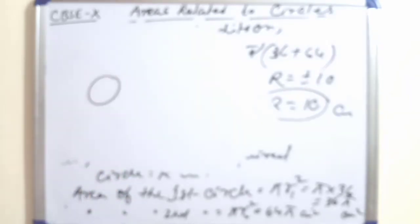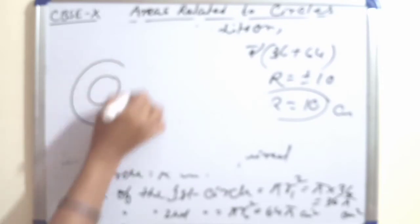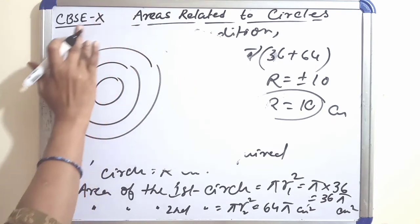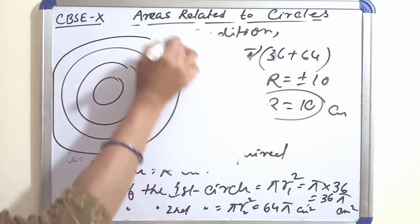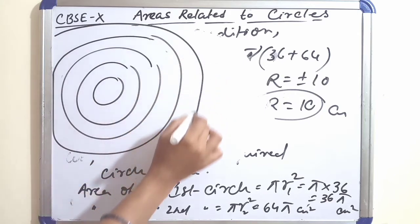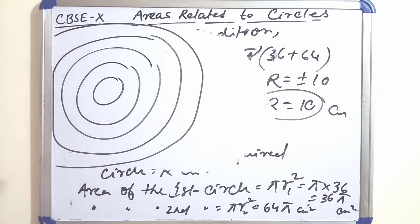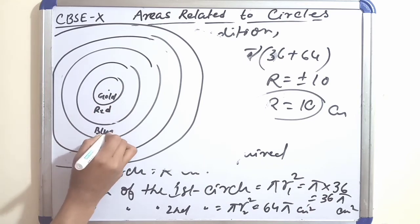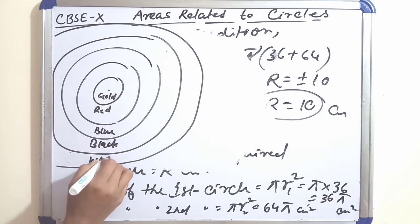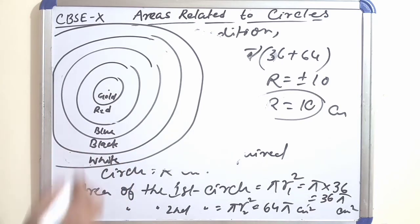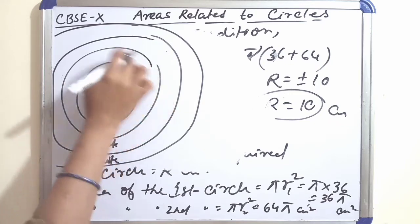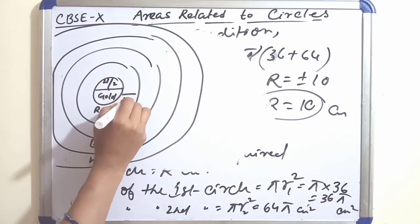So we have five concentric regions: gold, red, blue, black, and white. The gold region is the innermost circle. Its diameter is 21 cm, so its radius = 21/2 = 10.5 cm. Each band beyond that is also 10.5 cm wide.